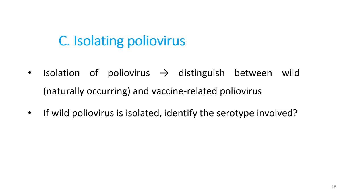Isolation of the polio virus should be done to distinguish between wild polio virus and vaccine-related polio virus. If wild polio virus is isolated, identify the serotype involved. The likely serotype will be wild polio virus type 1, because wild polio virus type 2 was eradicated in 2015 and wild polio virus type 3 was eradicated in 2019. So if we get wild polio virus from an AFP case, it has to be type 1.